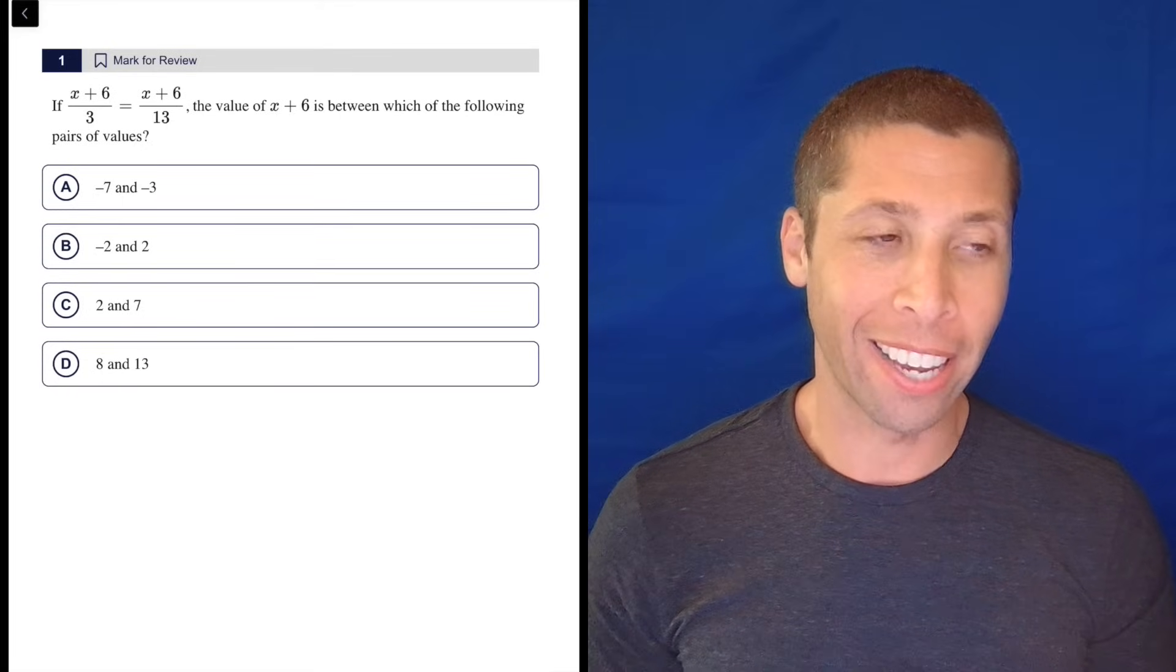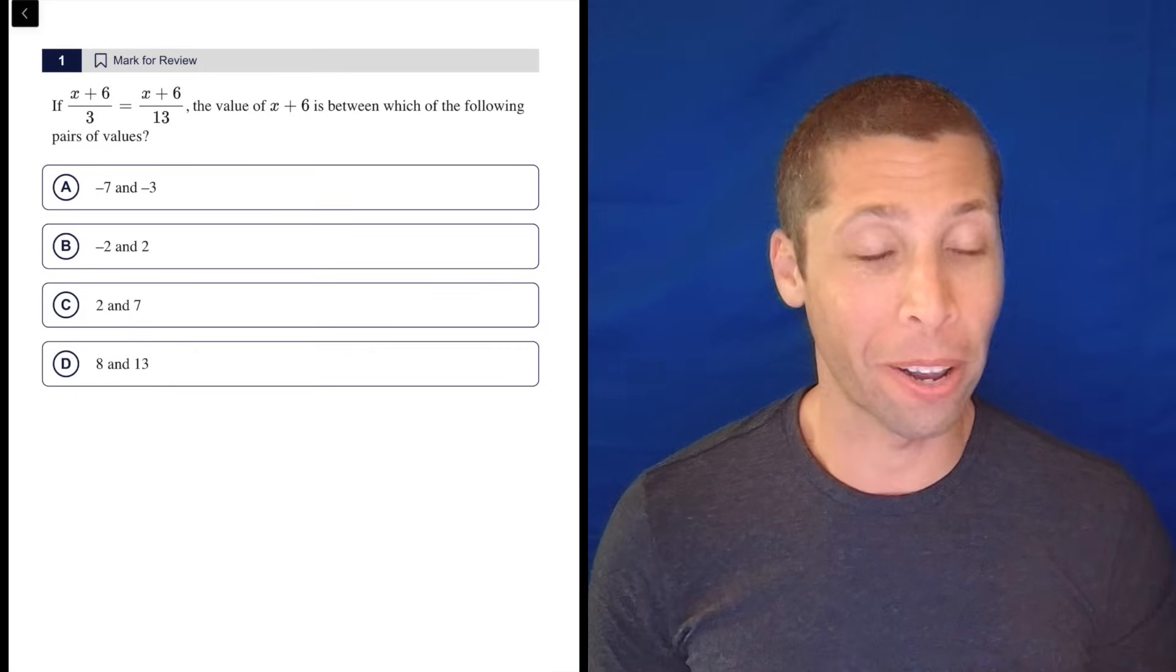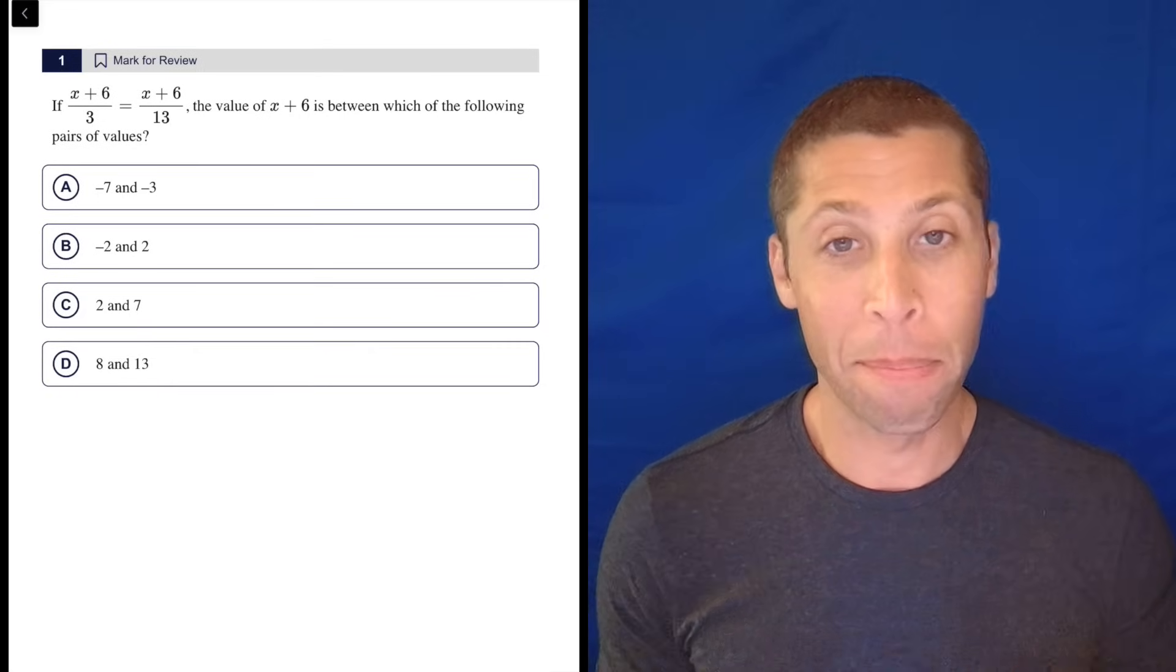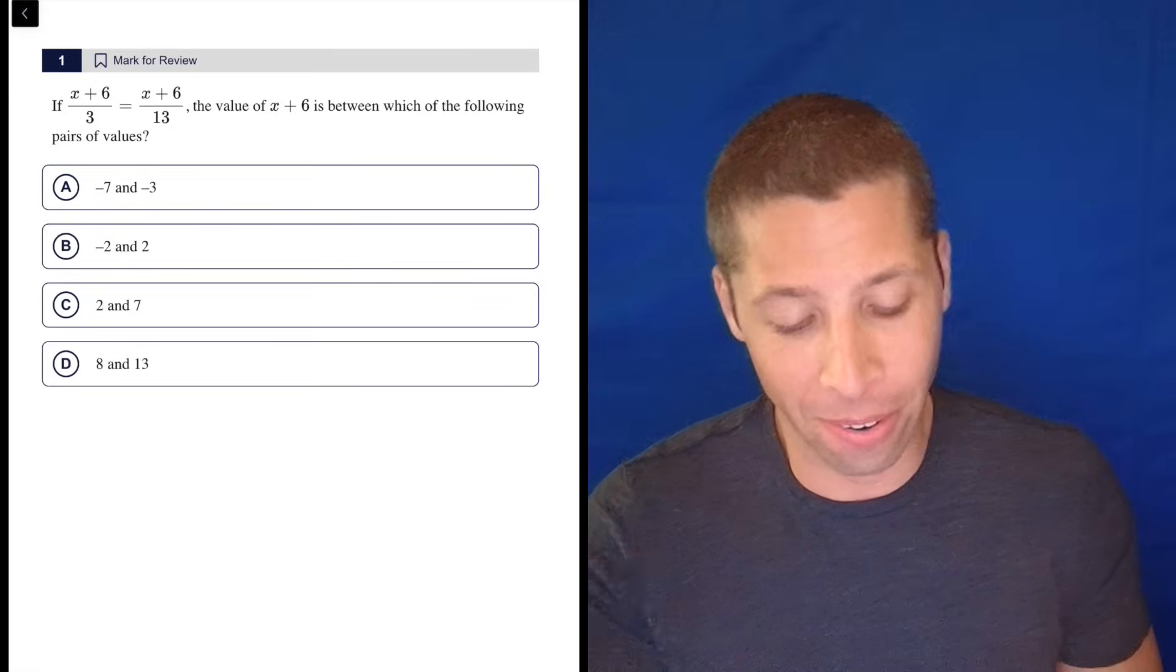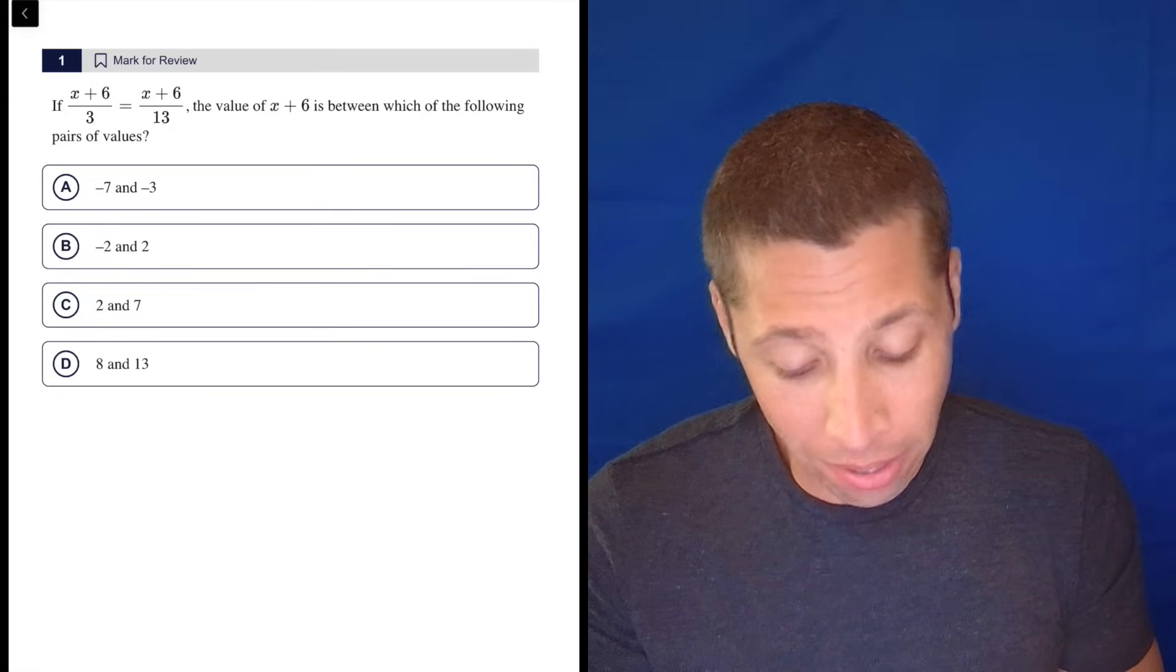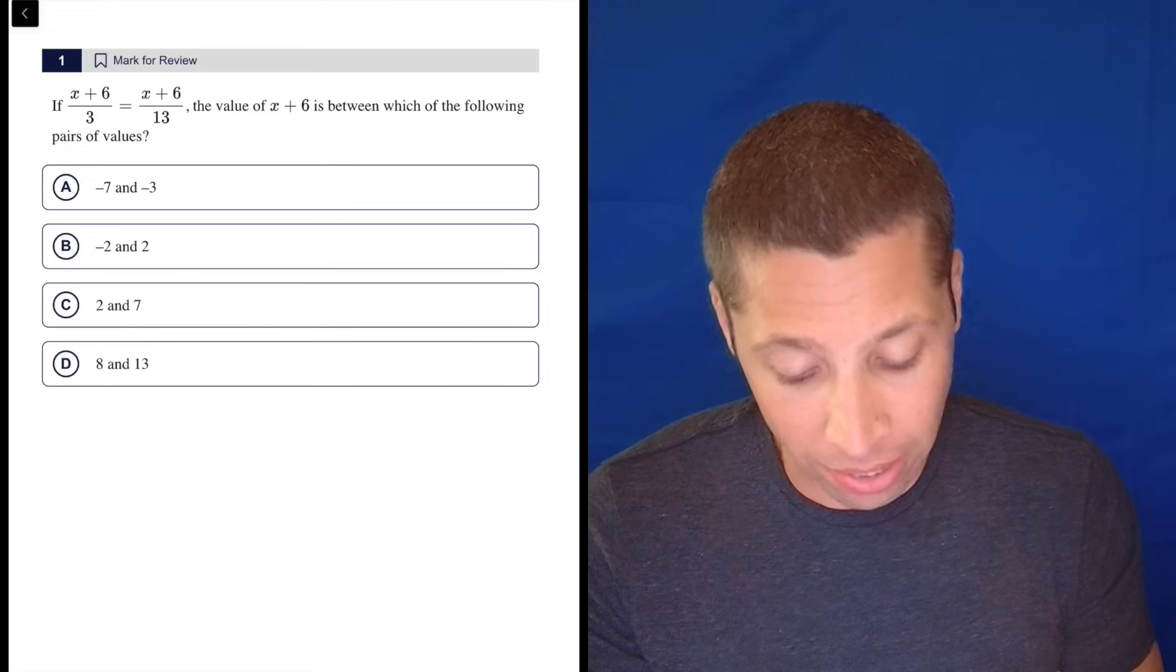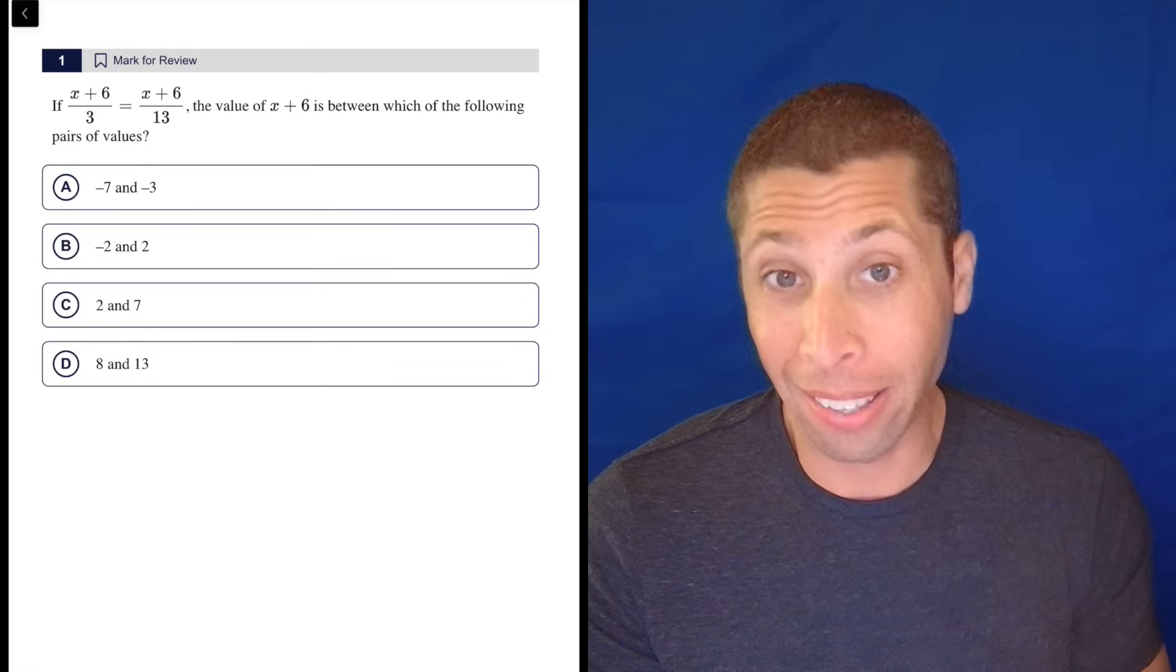So it's a great example of how some questions have a built-in shortcut and some people are going to sense that shortcut right away and get the question right. But there's a lot of times in the SAT where the shortcut isn't that short, and so I don't really care that there's a shortcut. They give us this equation. They want the value of X plus six. They ask about it in a weird way, but if you want to solve for X you could do